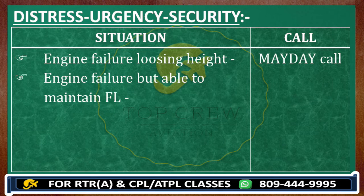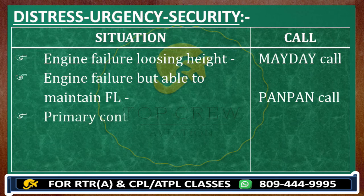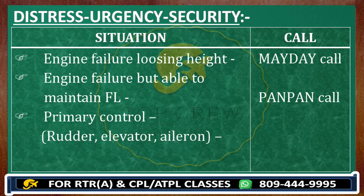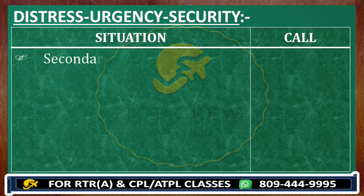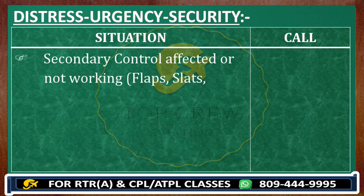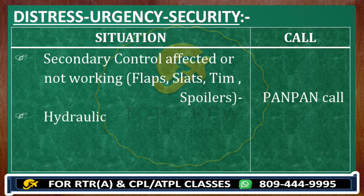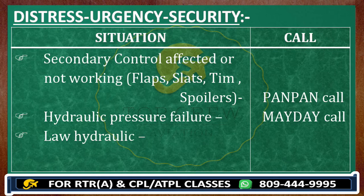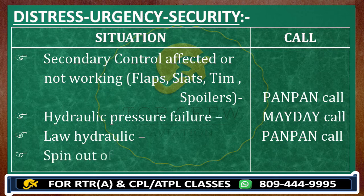Hydraulic pressure failure is always a Mayday call. Low hydraulic pressure is a Pan Pan call. Be clear on the terminology: hydraulic pressure failure and low hydraulic both sound similar, but hydraulic pressure failure is Mayday, and low hydraulic pressure is Pan Pan. Spin out of control is always Mayday.